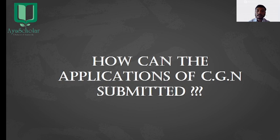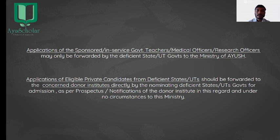How can CGN applications be submitted? Applications of sponsored or in-service government teachers, medical officers, or research officers may only be forwarded by the deficient state or union territory governments to the Ministry of Ayush. Applications of eligible private candidates from deficient states or union territories should be forwarded directly to the concerned donor institutes by the nominating deficient states or union territory governments, as per the prospectus or notifications of the donor institute — and under no circumstances to the Ministry of Ayush.